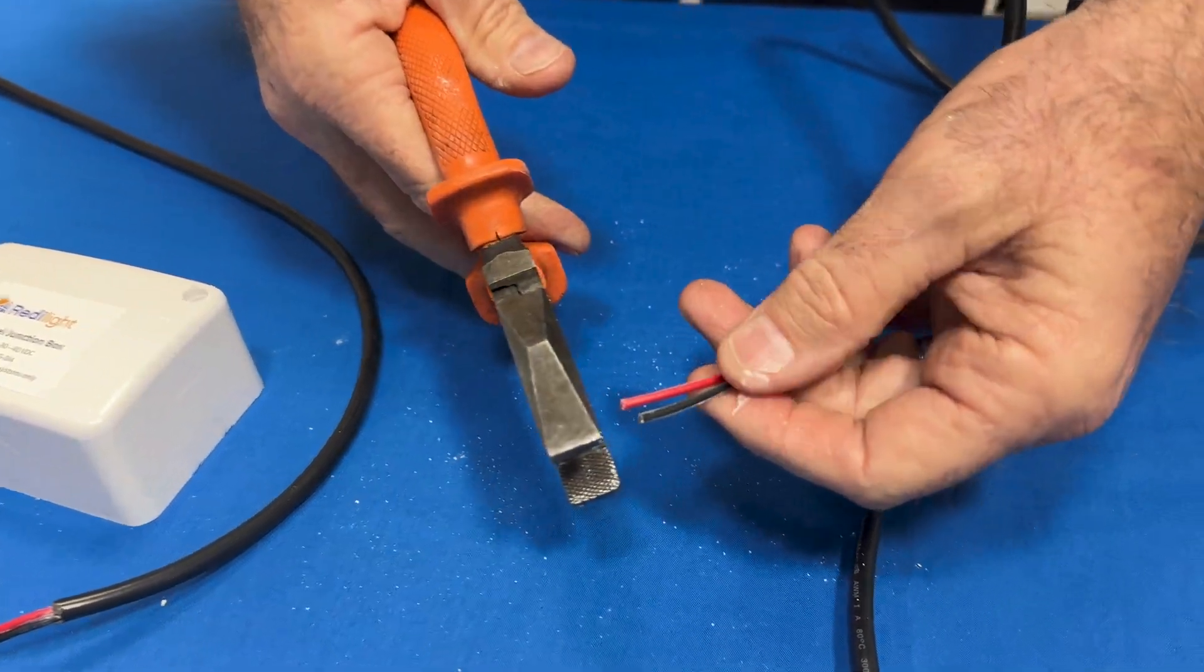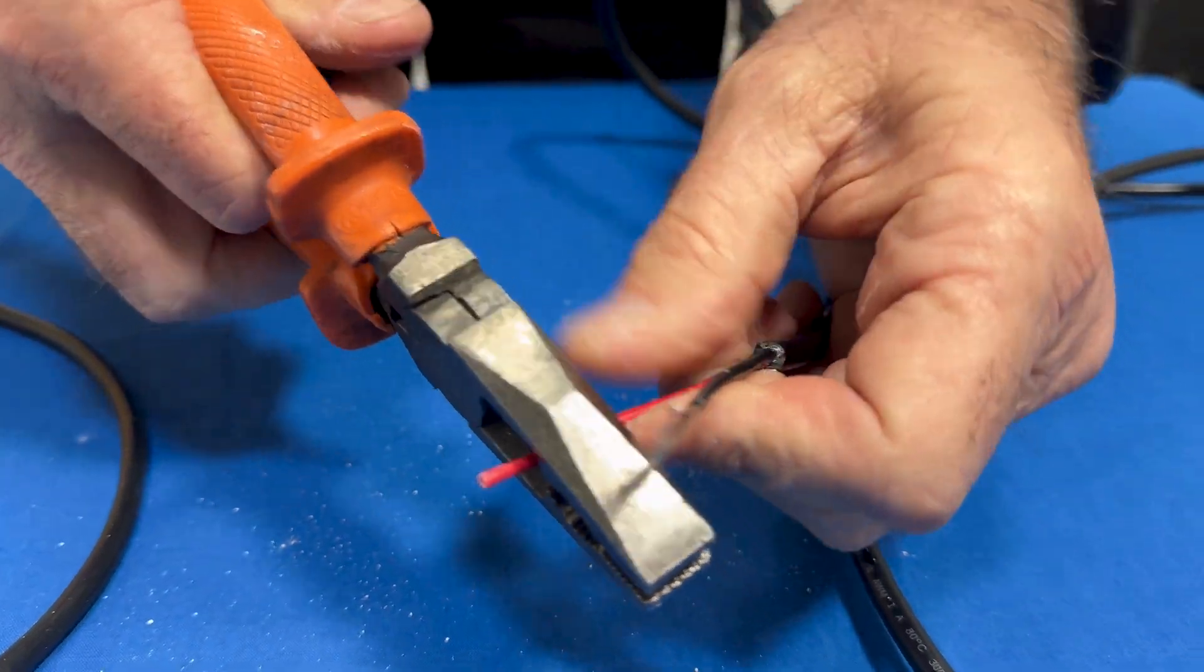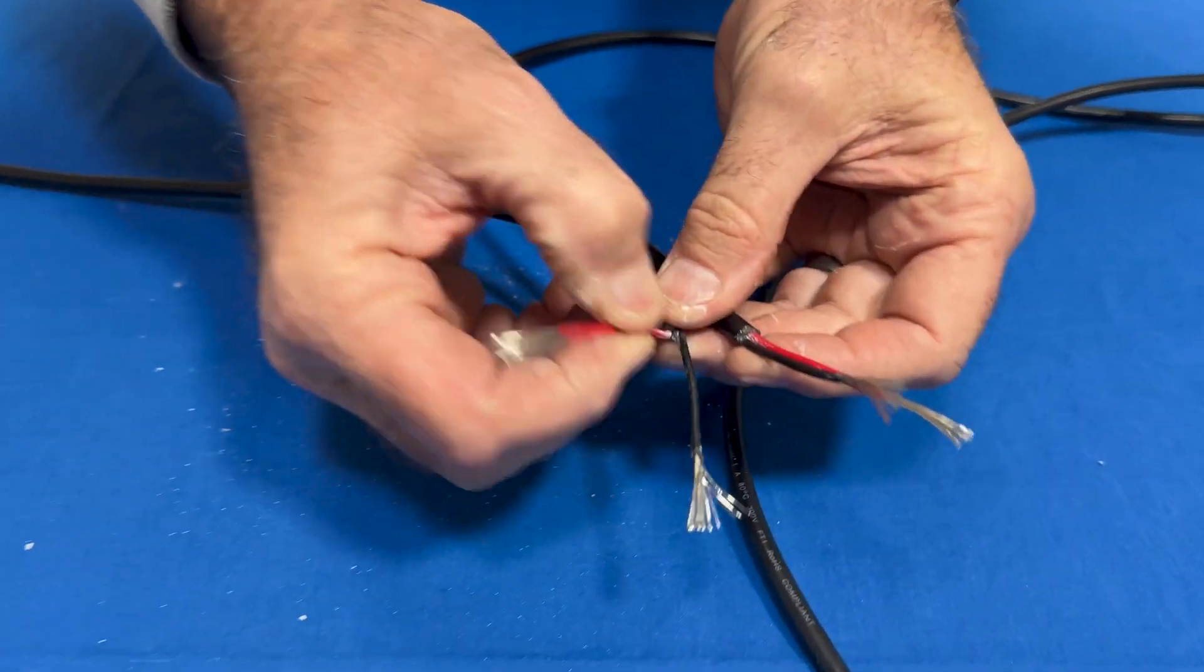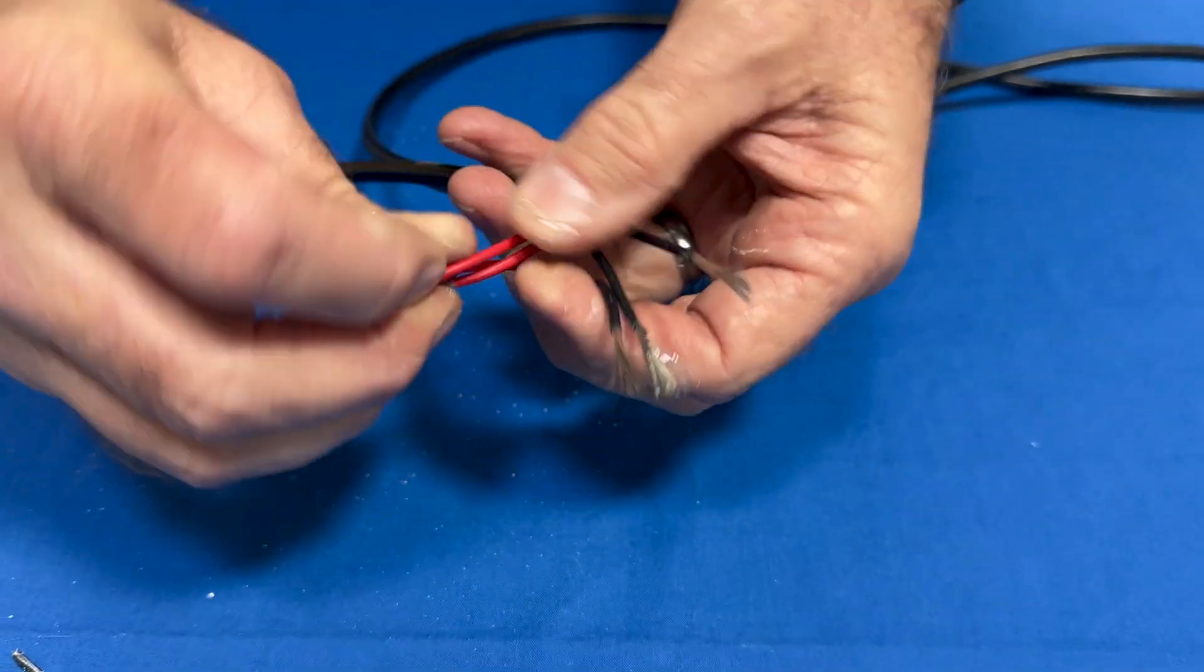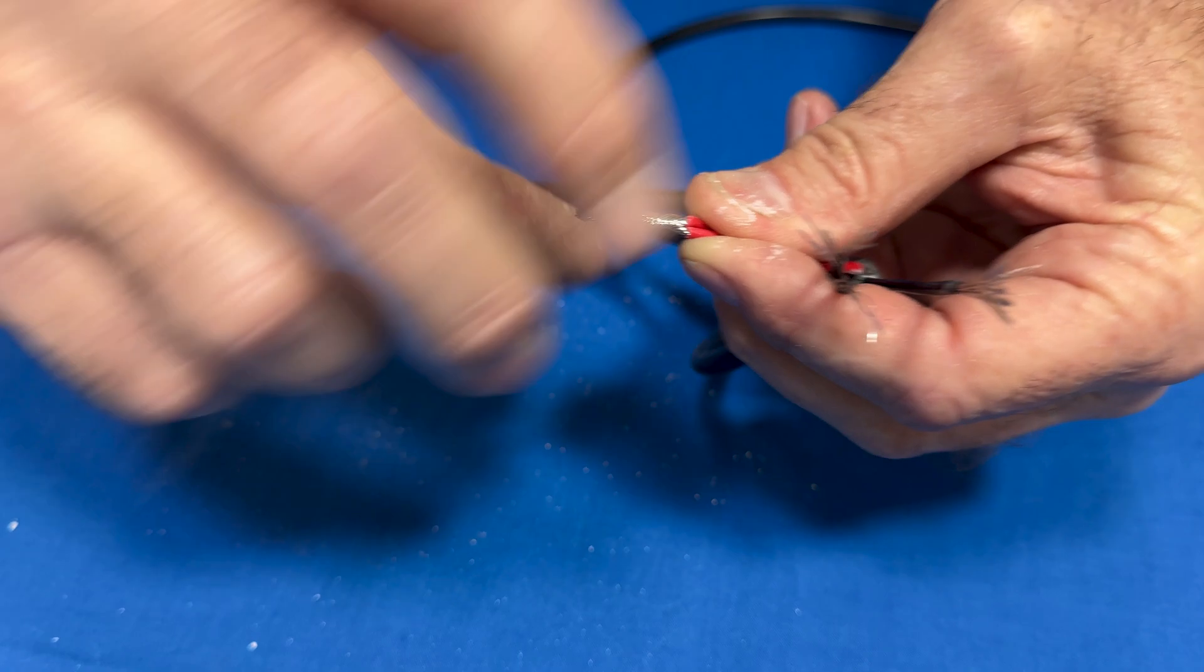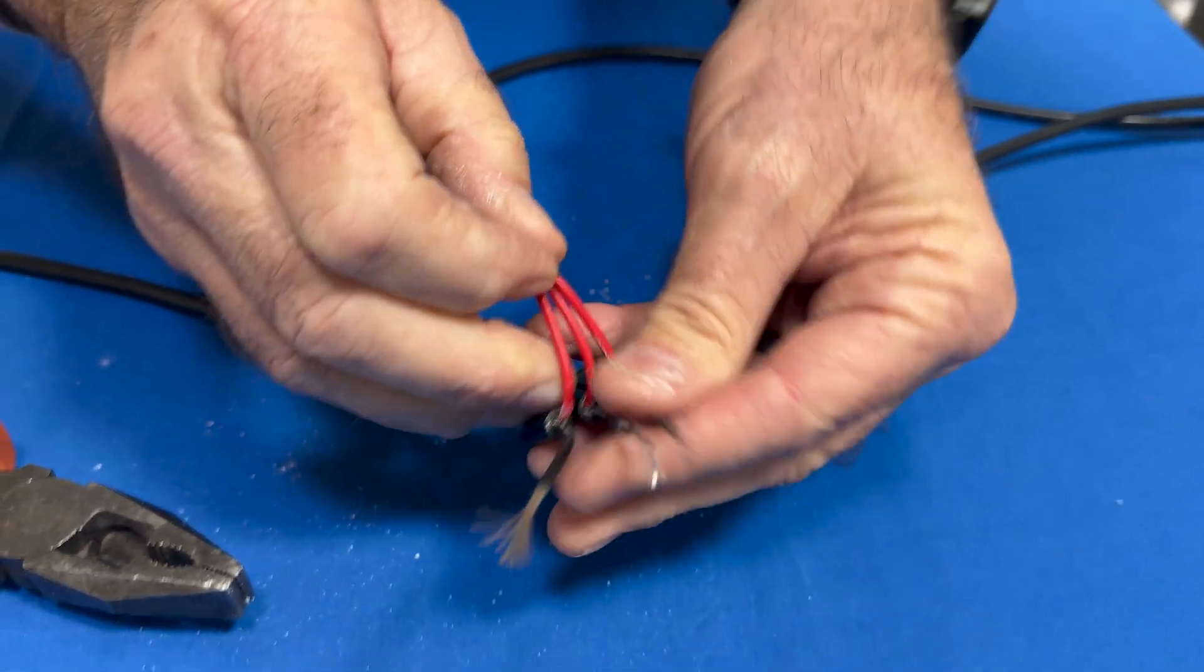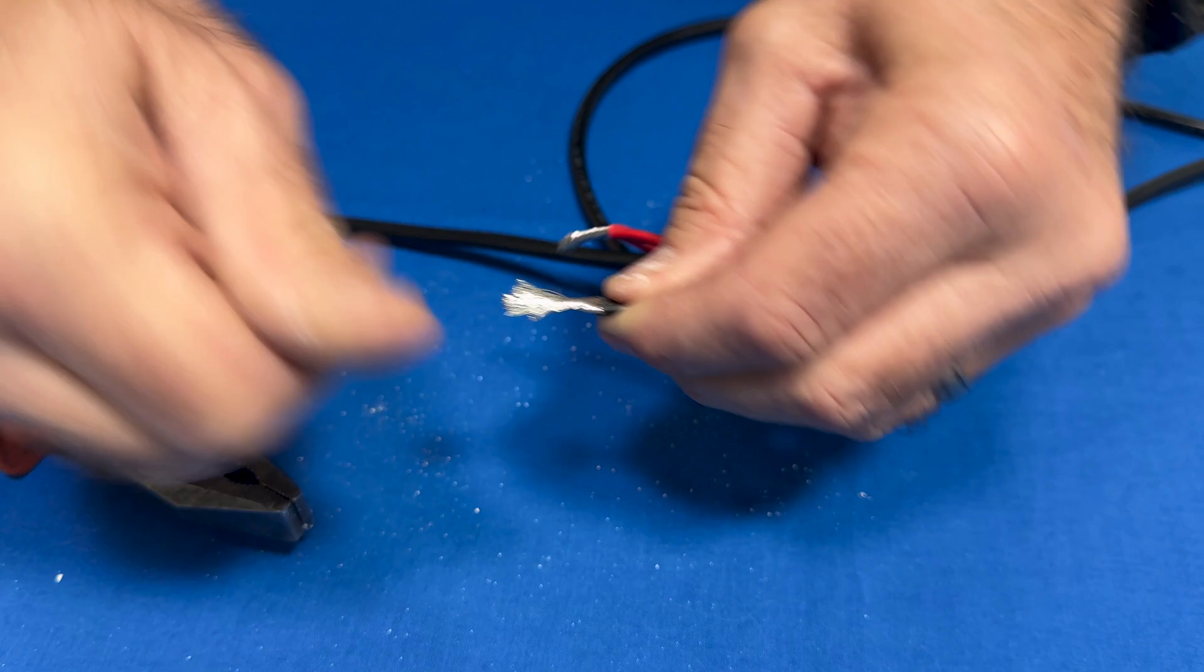Okay, so strip back the red and black. Pretty simple, just join all your reds just like this. Get them finger tight first and then twist them together. Then join all your blacks. That's sort of how we do it.